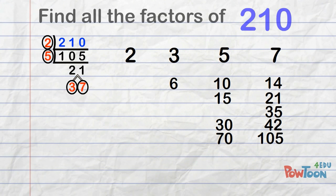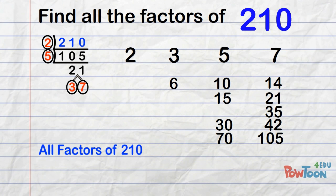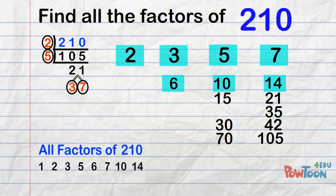To finish off, we list all the factors of 210 in ascending order. Start with 1, then 2, 3, 5, 6, 7, 10, 14, 15. Just do what I'm doing, go through your list. And when they're all done, you finish up with 210, the number itself.